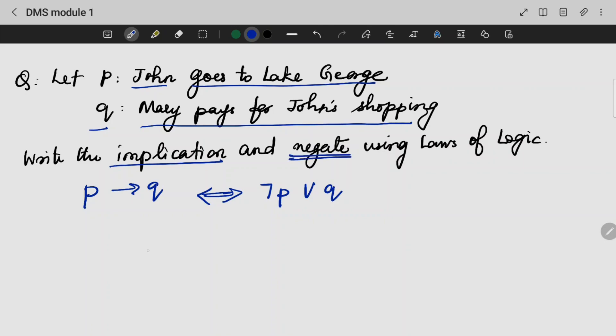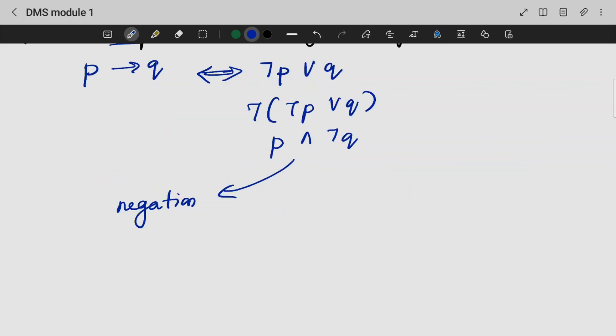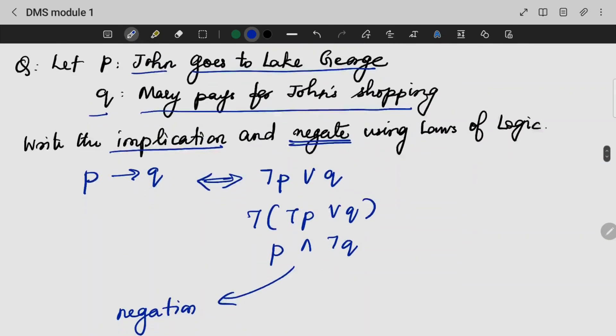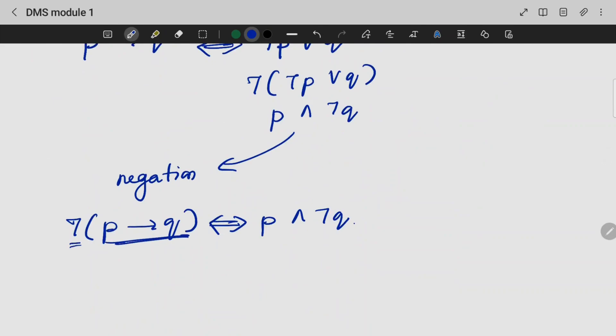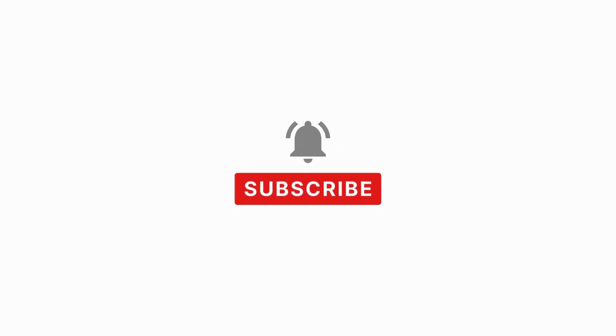Next, is it possible to negate? Yes, we can negate it. Not of (not P OR Q) is P AND not Q. We can write this in form of negation. That is why we have to negate it. So, the negation of this statement is: John goes to Lake George, but Mary does not pay for the shopping.